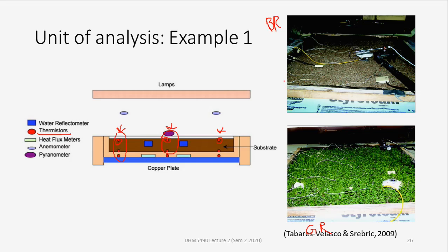So each thermistor is an individual unit. But if you are going to compare green roof to bare roof, then as each roof has a number of thermistors, the whole array of thermistors can be viewed as a group. You may take the mean value and standard deviation of them — do this process for the bare roof and also for the green roof — and then compare the mean temperature of green roof to the mean temperature of bare roof. That is how you view a large group of thermistors as a group, grouped by roof type.